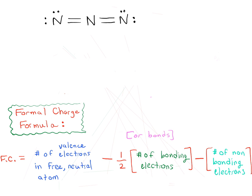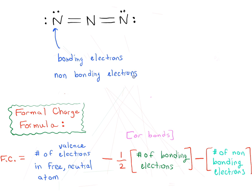Hopefully you've given this a shot, so let's break this down atom by atom. Starting with the nitrogen on the left, the pieces of information we need are the number of bonding electrons and the number of non-bonding electrons, which we'll plug into our formal charge formula. We have two bonds to the other nitrogen, so four bonding electrons total, and also four non-bonding electrons.